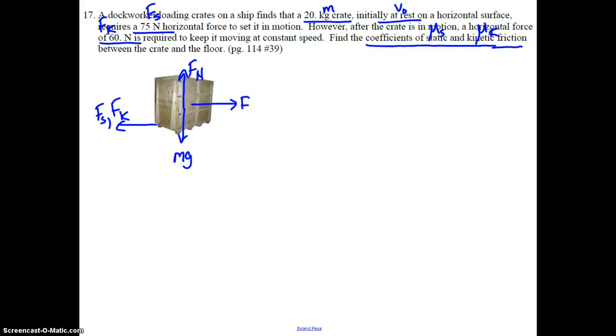That would be the free body diagram for the crate. This is our first friction problem here, and not too bad because all they're asking us for is the coefficients. So we'll start off with Fs equals mu_s times Fn.